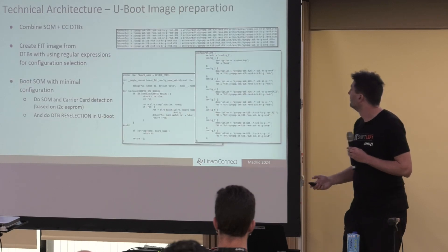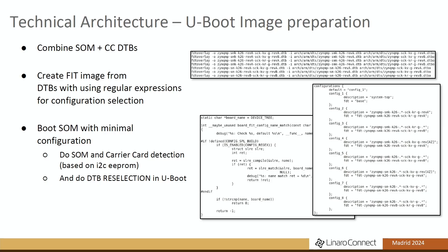How we boot a system through boot.bin: we start ImageSelector to find out if we're booting image A or image B, then jump to it. Because we want to use the same image that works for all combinations, we boot the system with a very minimalistic DTB which describes all the common peripherals needed to identify the system. Once we know which system we're running on, we switch to the proper device tree that describes that specific combination.